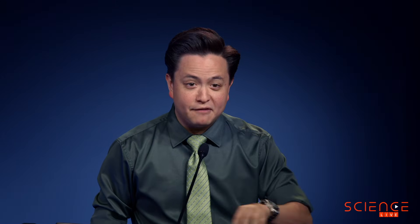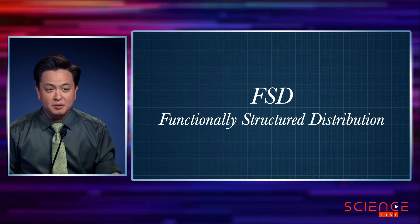When a text message goes from your phone to someone else's, it doesn't go directly — it goes through a server. When Billings saw this, he realized it meant you could have an unlimited number of computers all connected. He called the concept Functionally Structured Distribution, or FSD, and started telling people about it.